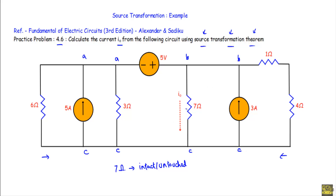Let's label the terminals: this is point A, this is point B, and this is point C. Since the 7 ohm branch is in the middle of the circuit, we will start our simplification from both sides. If the branch were on the right side we would simplify from the left, and vice versa. Here it is in the middle, so we simplify from both sides.